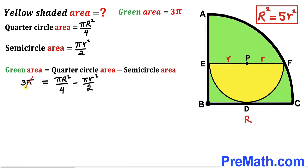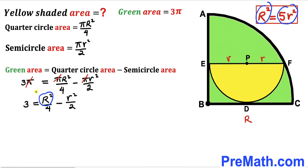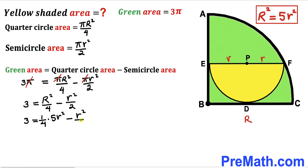We can cancel π from all terms, leaving us with: 3 = R²/4 − r²/2. Now, since R² = 5r², we replace uppercase R²: 3 = (1/4)·(5r²) − r²/2.